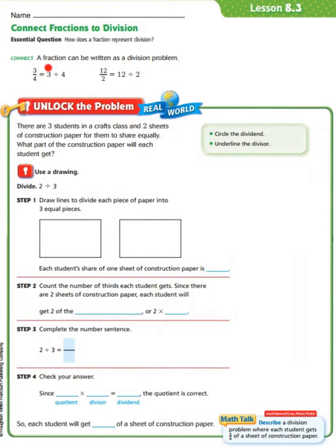A fraction can be written as a division problem. For example, 3/4 equals the numerator 3 divided by the denominator 4. Another example would be 12/2, which equals 12 being the numerator divided by 2 being the denominator.